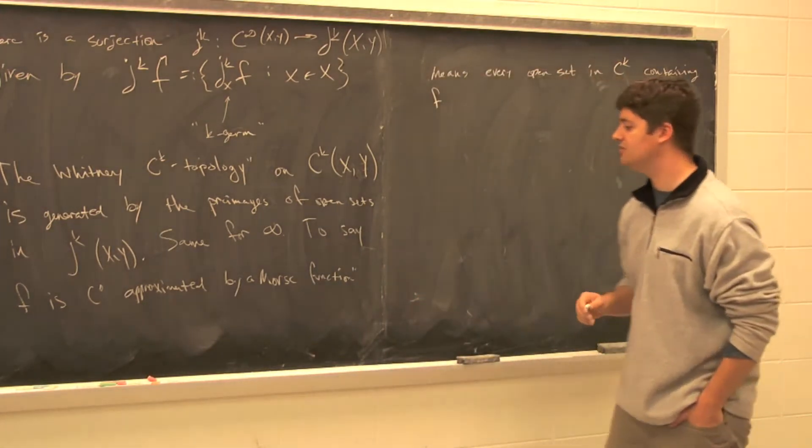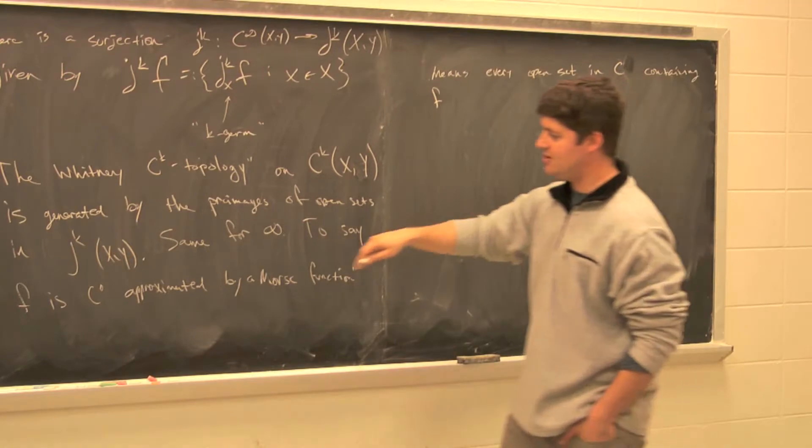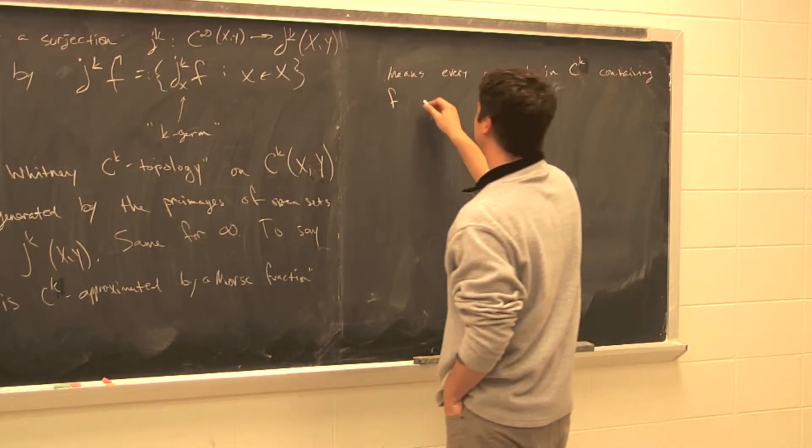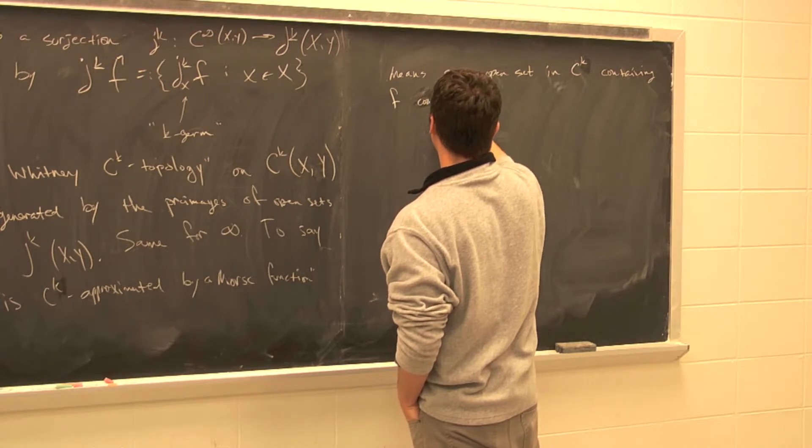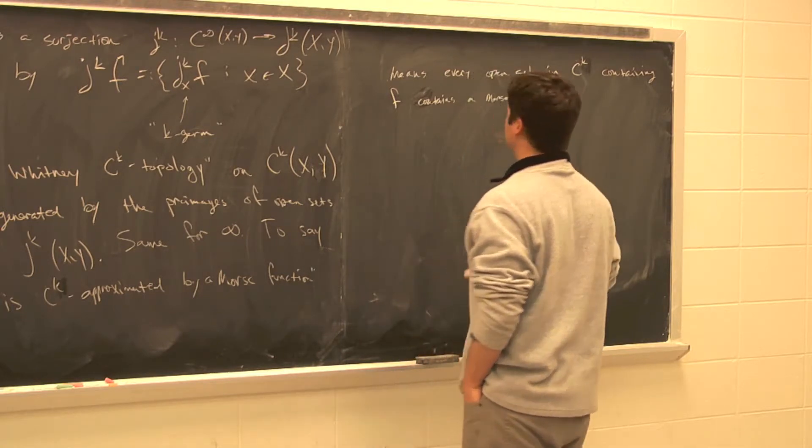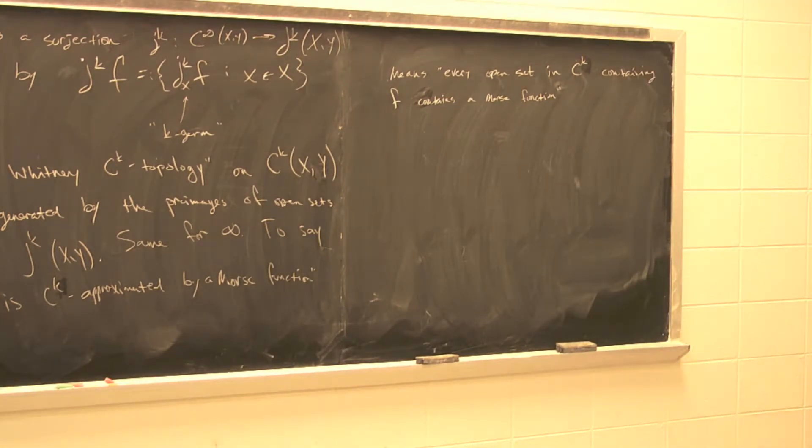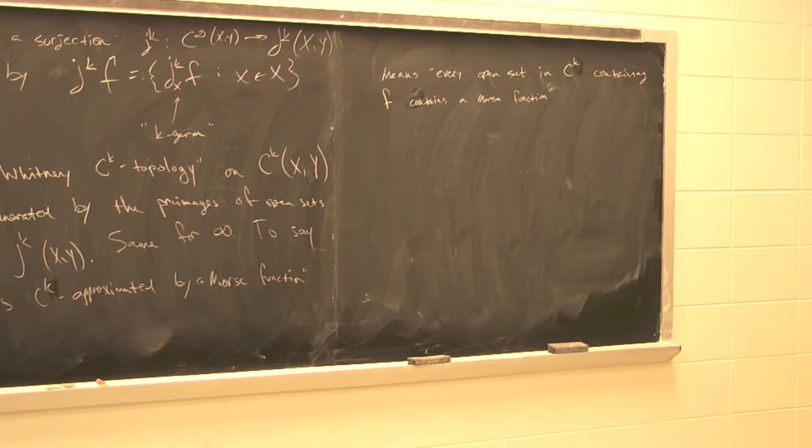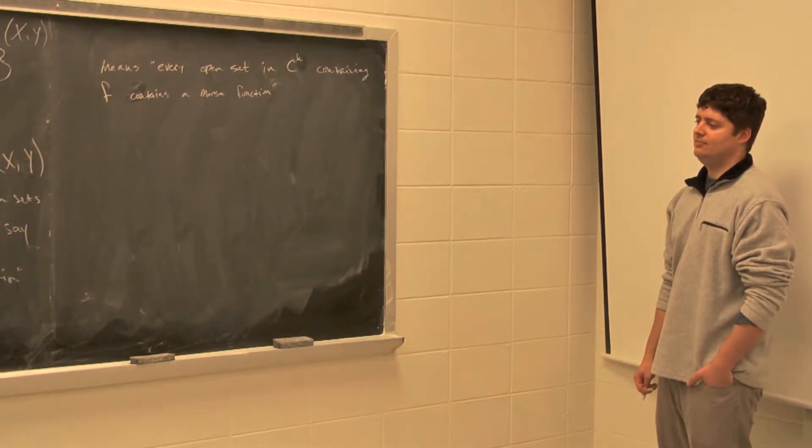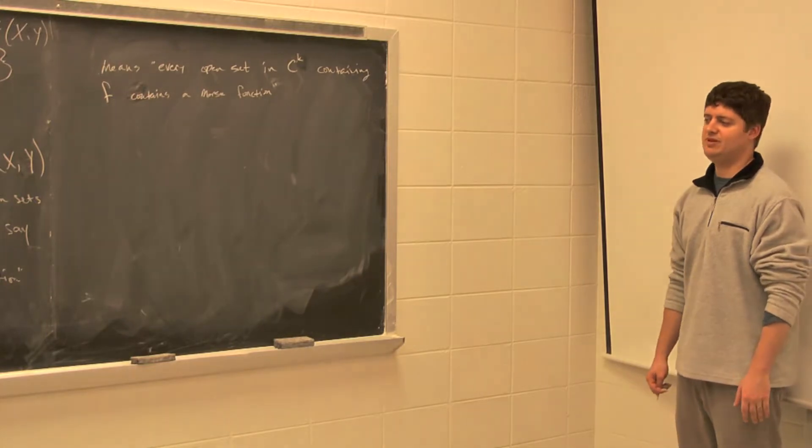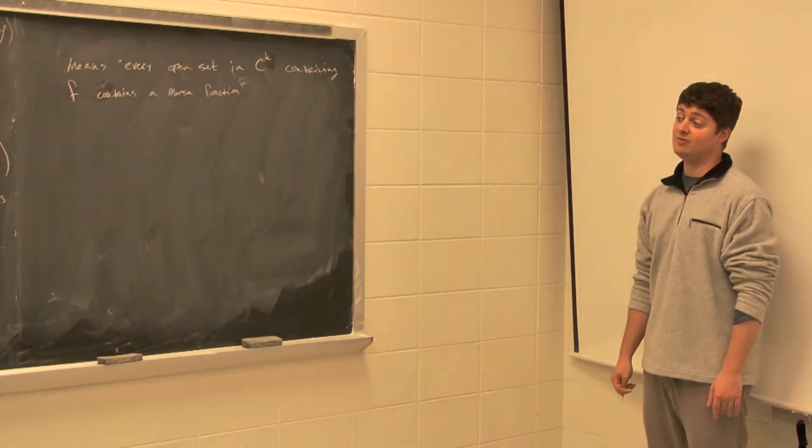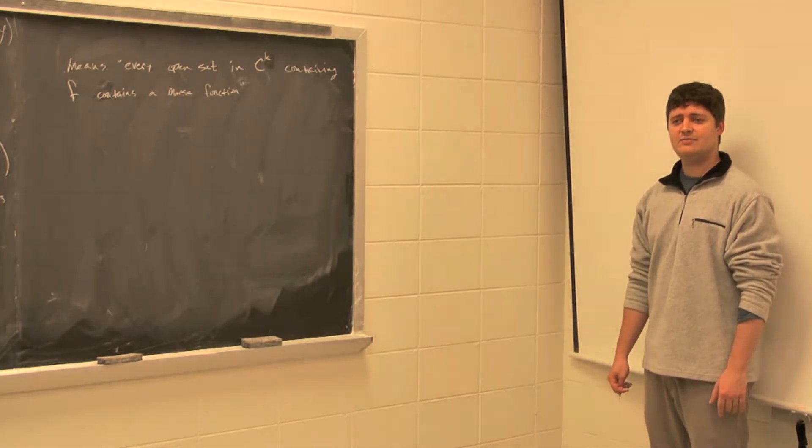Same for infinity. And so, to say that f is C^k approximated by, for example, a Morse function—anyone want to take a guess at what that might mean? Given what we have, where I've been talking about topologies and open sets and so forth. If you think about sequences, or if you think about every open set in the C^k topology containing f contains a Morse function.